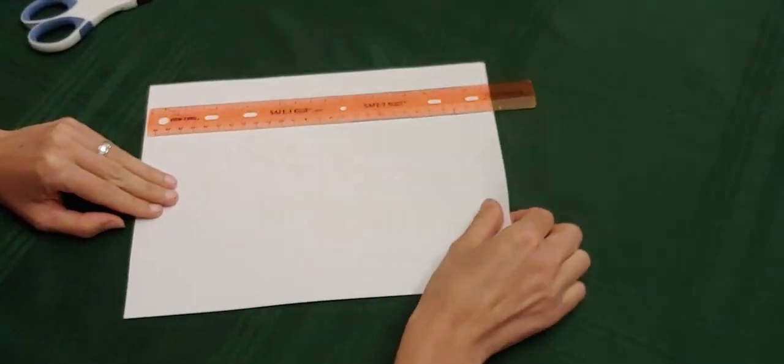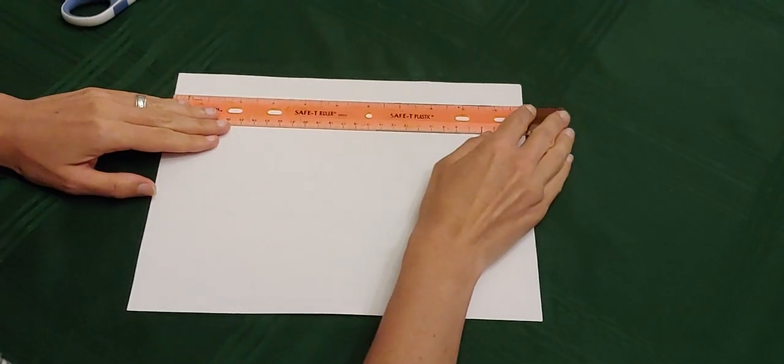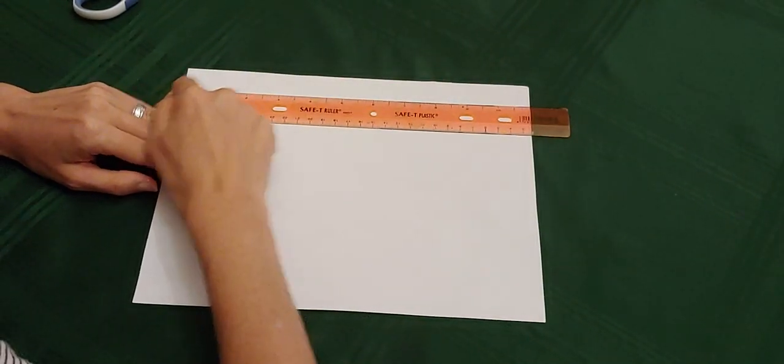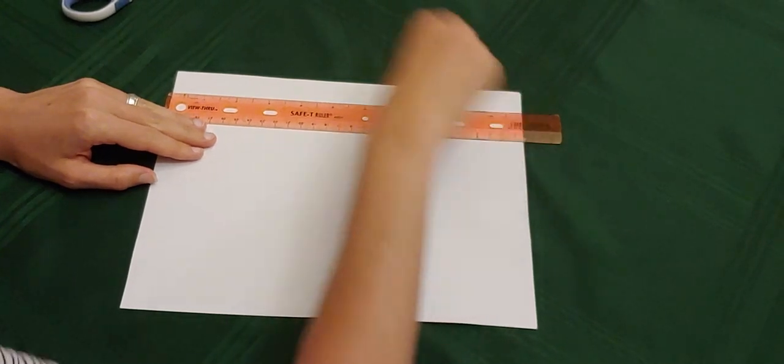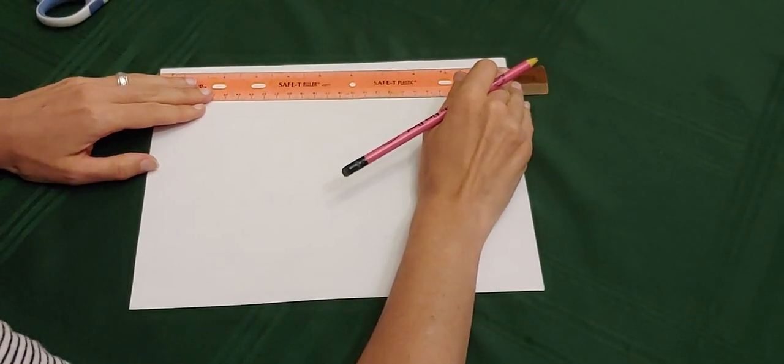You're going to have your paper laid out landscape style, and if you put the zero right here at the end, you'll see that it goes all the way to the 11, and you're going to need to find the center.